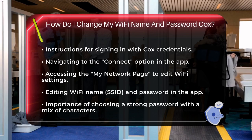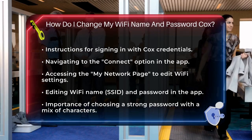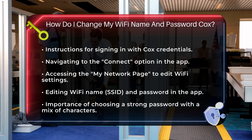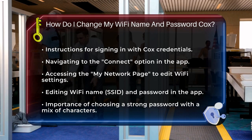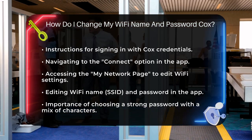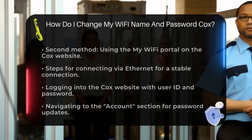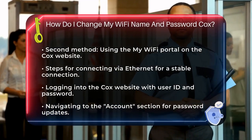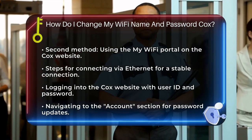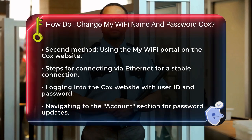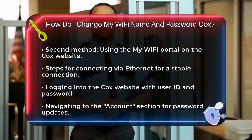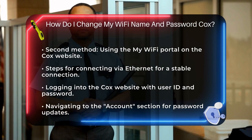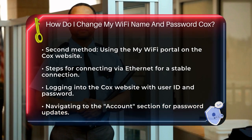Another way to do this is by using the My Wi-Fi portal on the Cox website. Start by connecting your device to an Ethernet cable to ensure a stable connection. Open your web browser and go to the Cox website. Sign in to your account using your user ID and password. Once logged in, navigate to the Account section and click on Password and Security. Here, you'll find the option to update your Wi-Fi password.